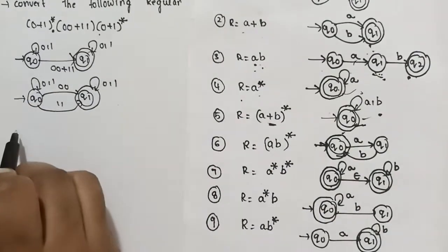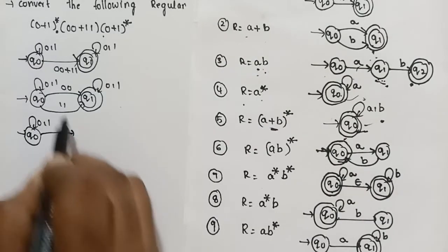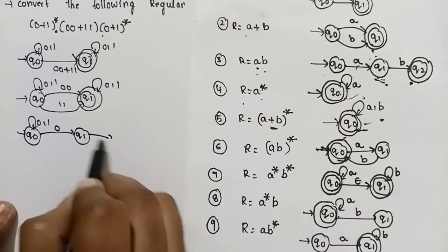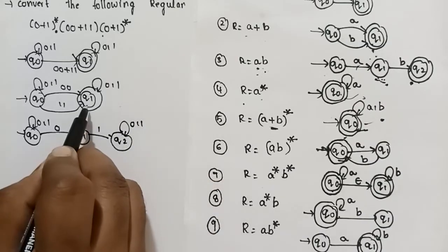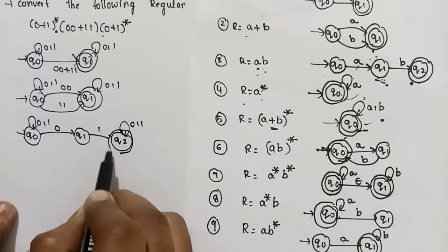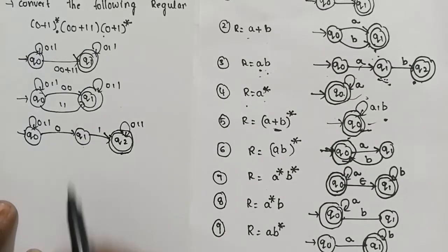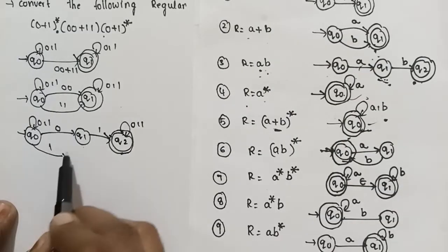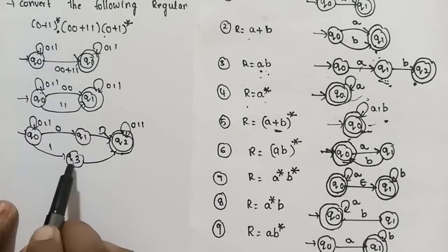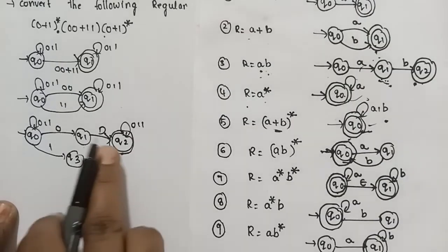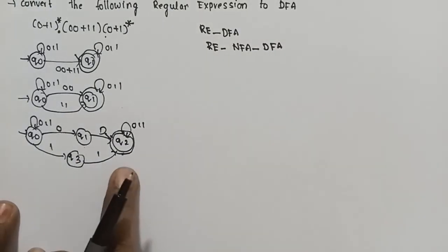Using the A, B formula and A plus B star formula, we expand the transitions. Q0 and 1 goes to Q3; Q3 and 1 goes to Q2. This completes the regular expression NFA constructs. Now we do one more: NFA to DFA.